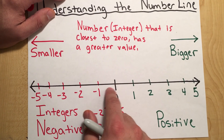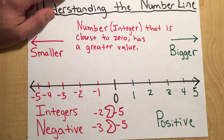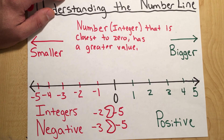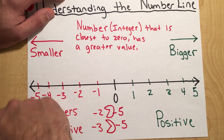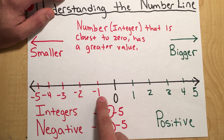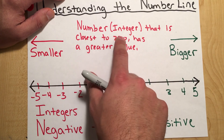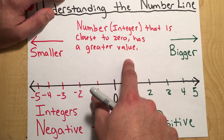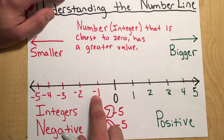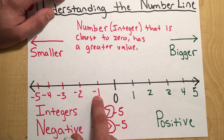If we were to extend this number line all the way to negative one hundred, here's a question before we finish: what would be greater — negative one hundred or negative one? We go back to our rule: any integer closest to zero has a greater value. So which one is closer to zero? Negative one. You guys are right — negative one would be the number with the greatest value.